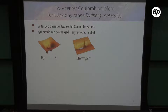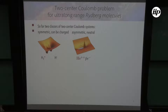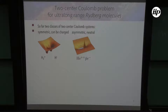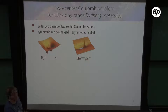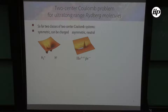So far we had two situations: the symmetric situation where fixed charges have the same sign, and the asymmetric case with different charges. Of course you could ask: I need a neutral system, so if I make one center a proton, I should probably take a charge away and leave the other as a neutral particle. So we would have a Rydberg atom and a neutral particle — can this bind? And yes, it can.